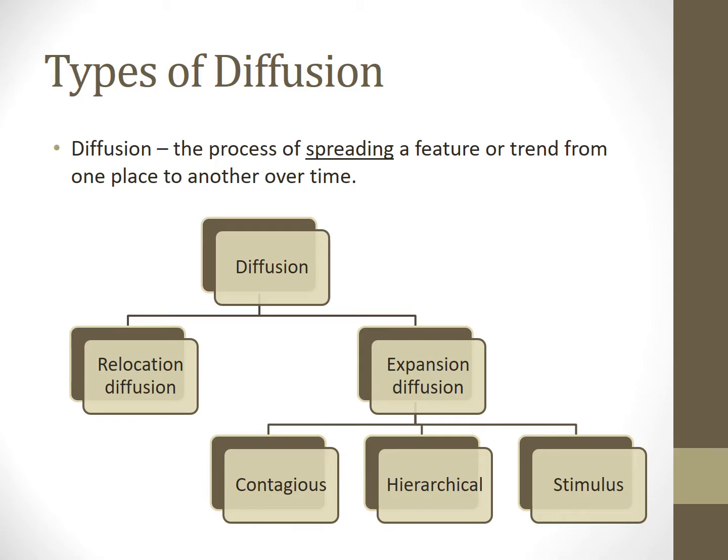There are two major types of diffusion: relocation diffusion and expansion diffusion. Within expansion diffusion, we can be more specific in terms of how it expands — it can expand through contagious diffusion, hierarchical diffusion, and stimulus diffusion. So let's look at each of these in turn and provide several examples associated with cultural diffusion.